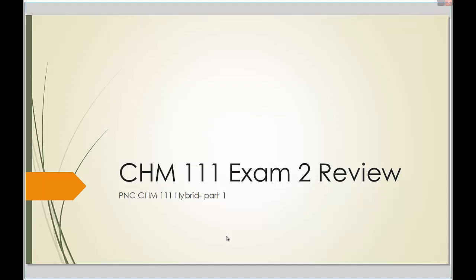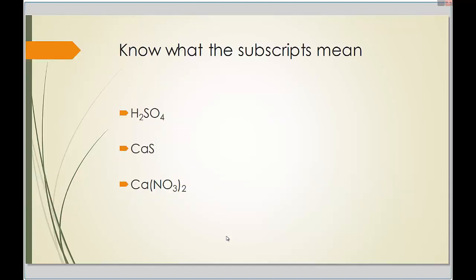This is the first part of exam 2 review for Chem 111. We're going to start with subscripts in chemical compounds and what they mean. For instance, this 2 means there are two hydrogens. When there's no number written, that's automatically a 1. So that means there's one sulfur and the four means there are four oxygens. The 2 outside the parentheses means everything inside is multiplied by two, giving us two nitrogens and six oxygens.